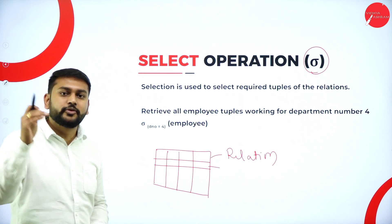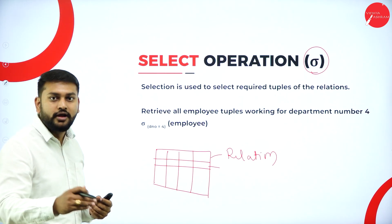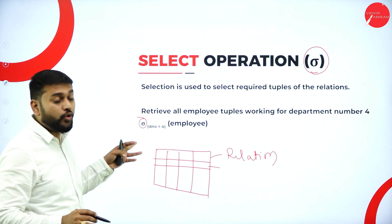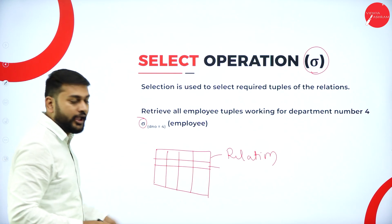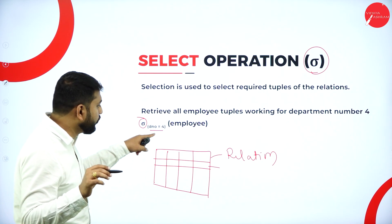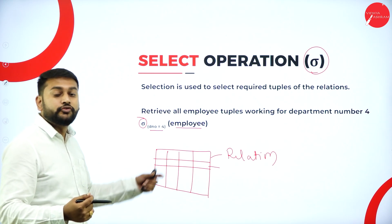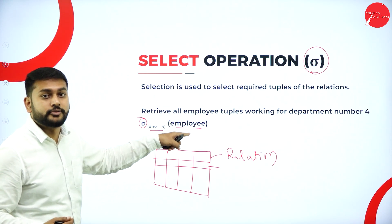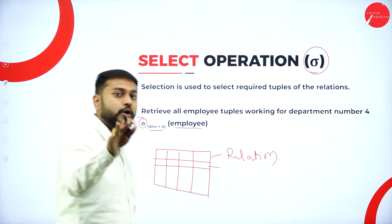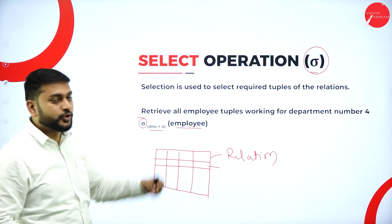So what is the syntax? I have some examples for this. The selection symbol is written, and then within the parenthesis I write the condition: department number equals four, and the relation employee within the bracket. From the relation employee whose department number is four, you select that row. That is what I am writing as a query. This is what you need to remember with respect to the selection operation.